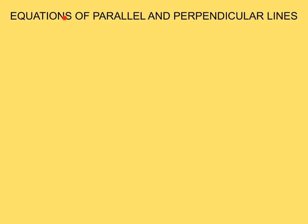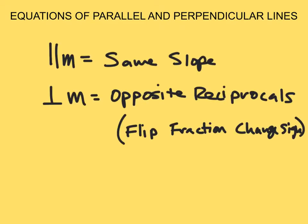In this video, we're going to talk about equations of parallel and perpendicular lines. To recap what we learned in the last section, let's talk about what the slopes of parallel and perpendicular lines look like. If we want to find the parallel slope, then we have the same slope. If we're trying to find a perpendicular slope, then our slopes are opposite reciprocals of each other, which means to flip the fraction and change the sign.